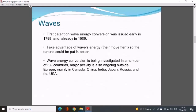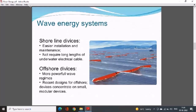However, only a fraction of this energy can be recovered. Wave energy systems are divided into two categories: first, shoreline devices, which are easier to install and maintain and do not require long lengths of underwater electrical cable; and second, offshore devices, which are in a more powerful regime — recent designs for offshore devices concentrate on small and modular devices.